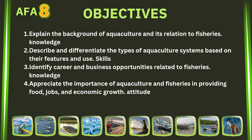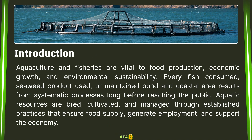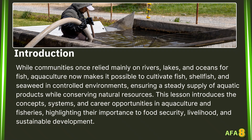The following are the objectives of this lesson. Aquaculture and Fisheries are vital to food production, economic growth, and environmental sustainability. Every fish consumed, seaweed product used, or maintained pond and coastal area results from systematic processes long before reaching the public. Aquatic resources are bred, cultivated, and managed through established practices that ensure food supply, generate employment, and support the economy. While communities once relied mainly on rivers, lakes, and oceans for fish, aquaculture now makes it possible to cultivate fish, shellfish, and seaweed in controlled environments, ensuring a steady supply of aquatic products while conserving natural resources. This lesson introduces the concepts, systems, and career opportunities in aquaculture and fisheries, highlighting their importance to food security, livelihood, and sustainable development.